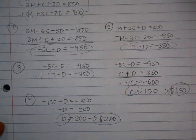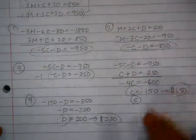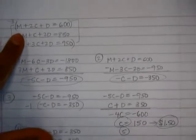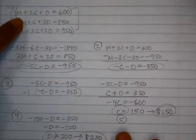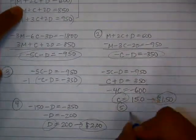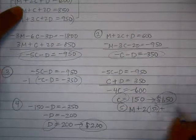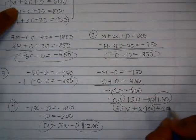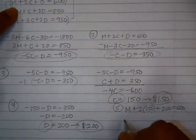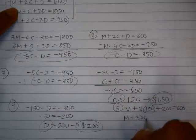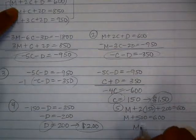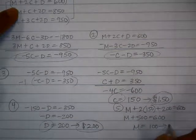And then lastly, I need to solve for M. So my fifth step here is to go back to the original equations and choose any of those to plug back into. So I'm just going to choose the first one. M plus 2C plus D equals 600. So that's M plus 500 equals 600. So M is 100 or $1.